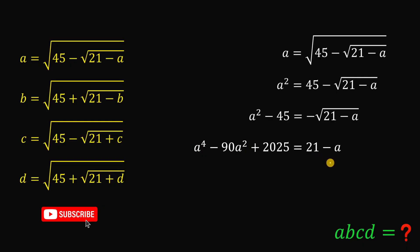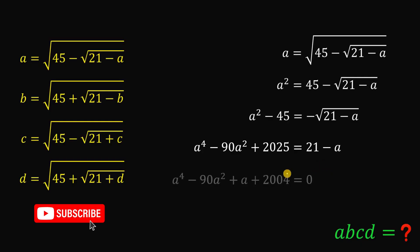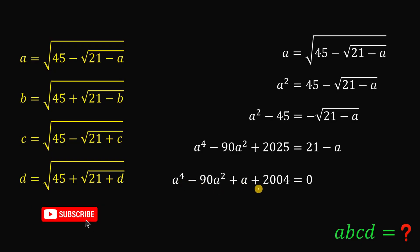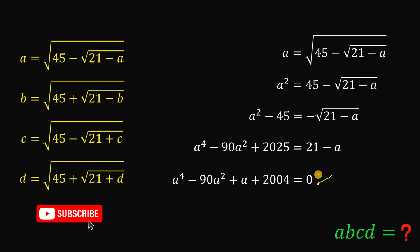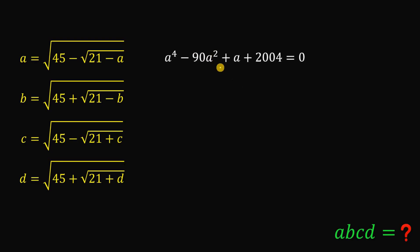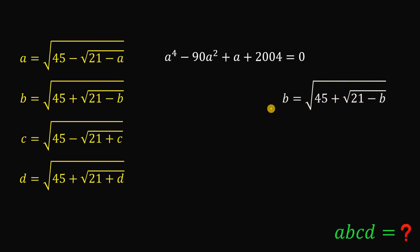Subtracting 21 from both sides and adding a to both sides — making the right-hand side equal to zero — gives us: a to the fourth power minus 90a-squared plus a plus 2004 equals zero. This is the result when we simplify the first equation.